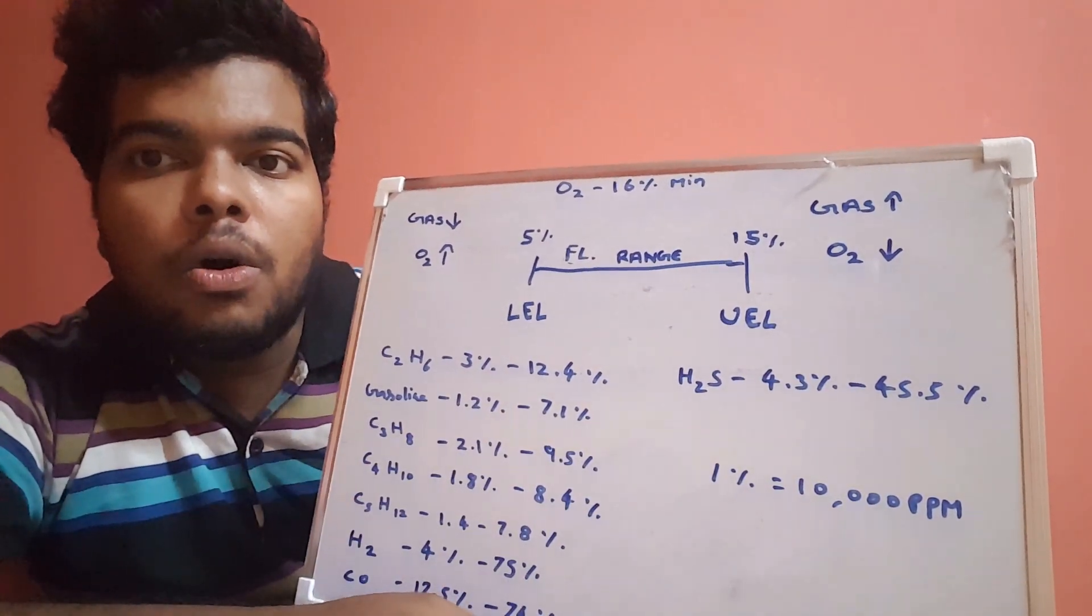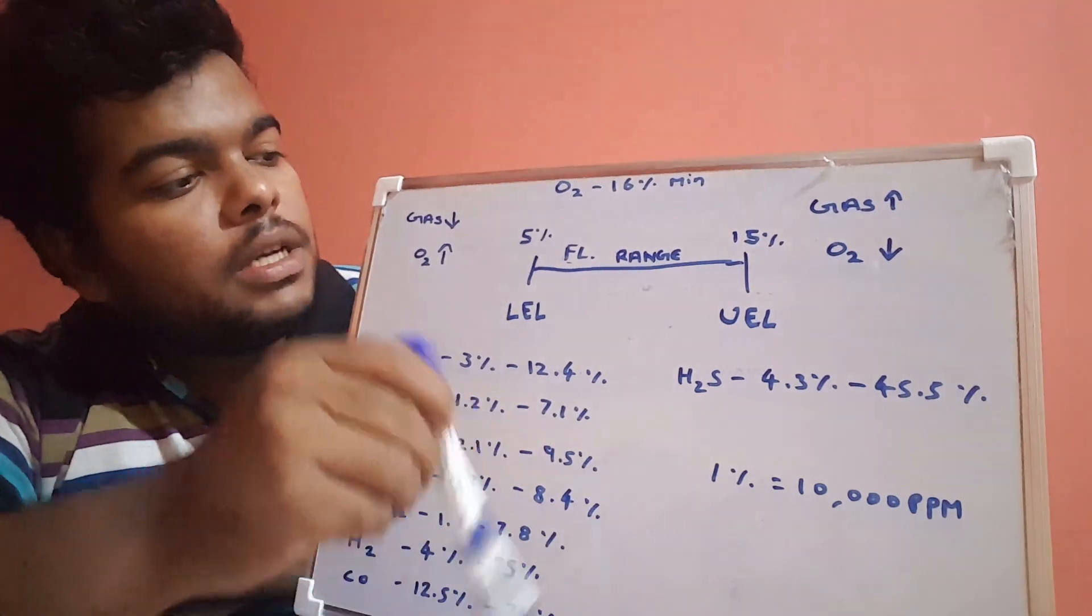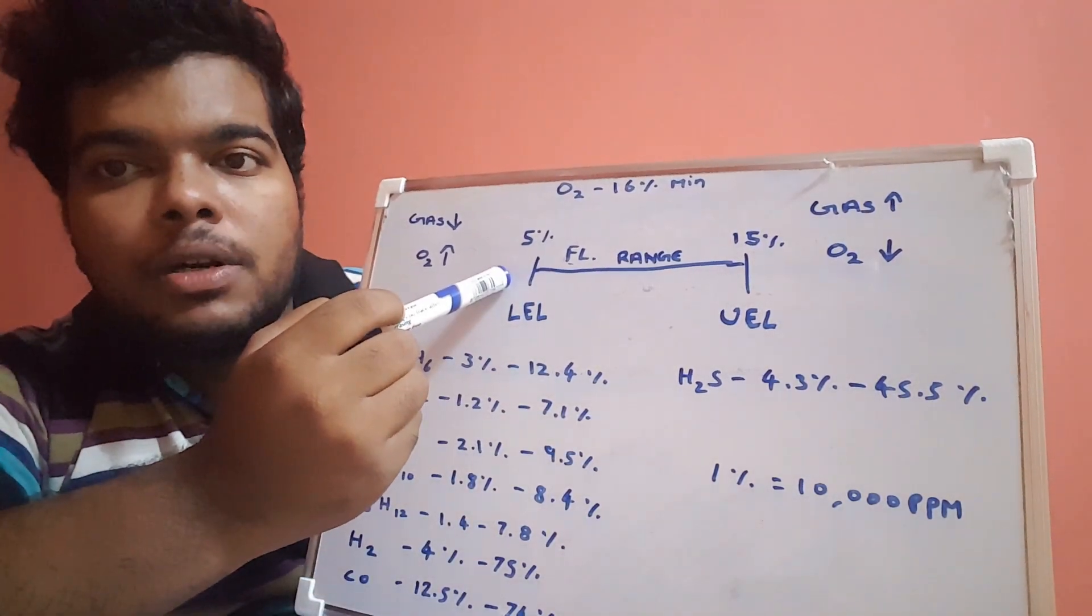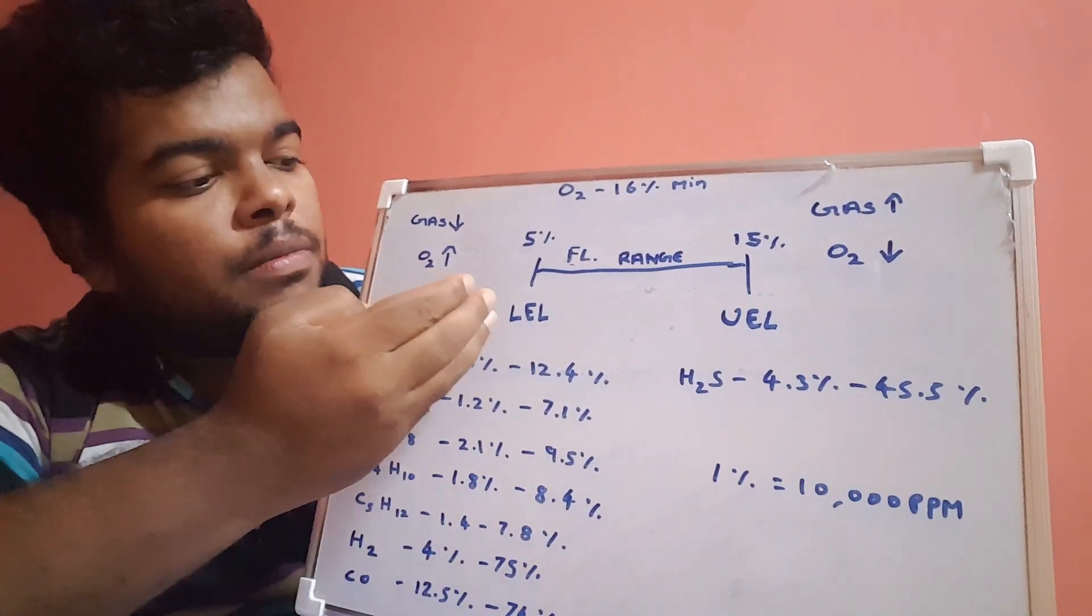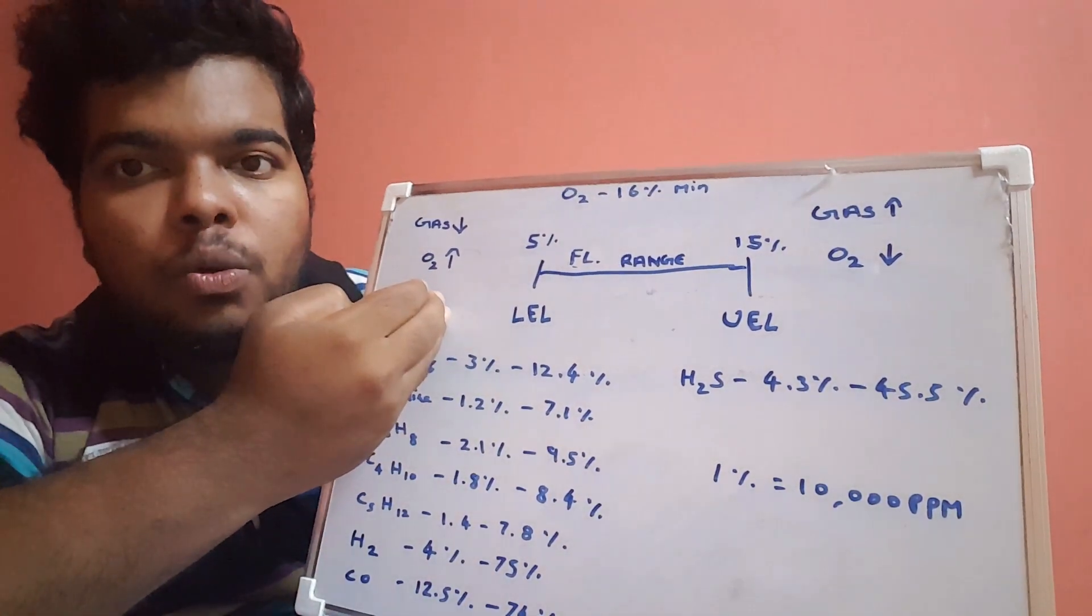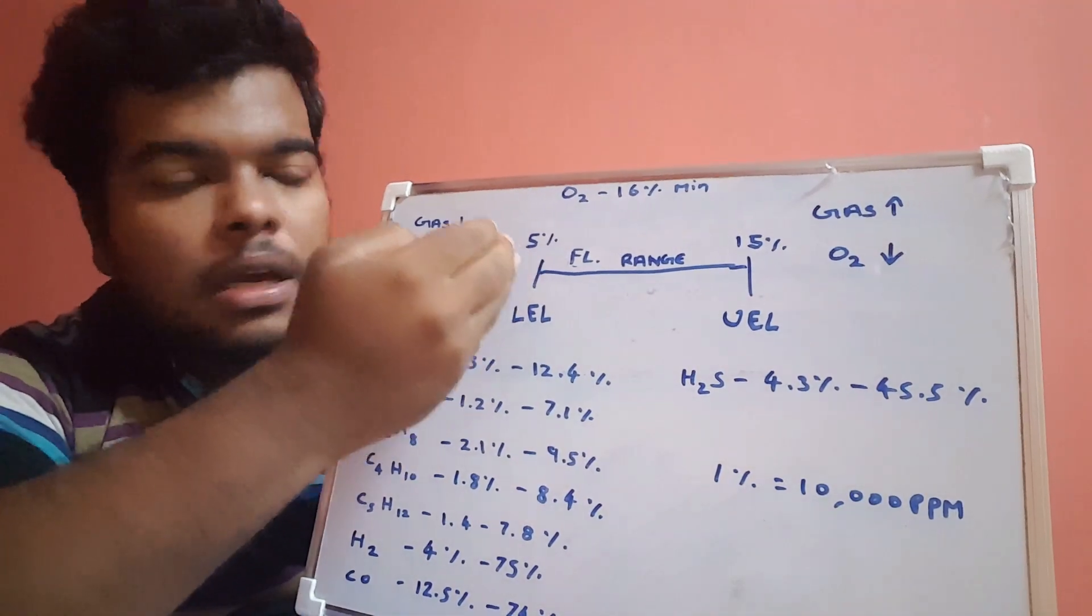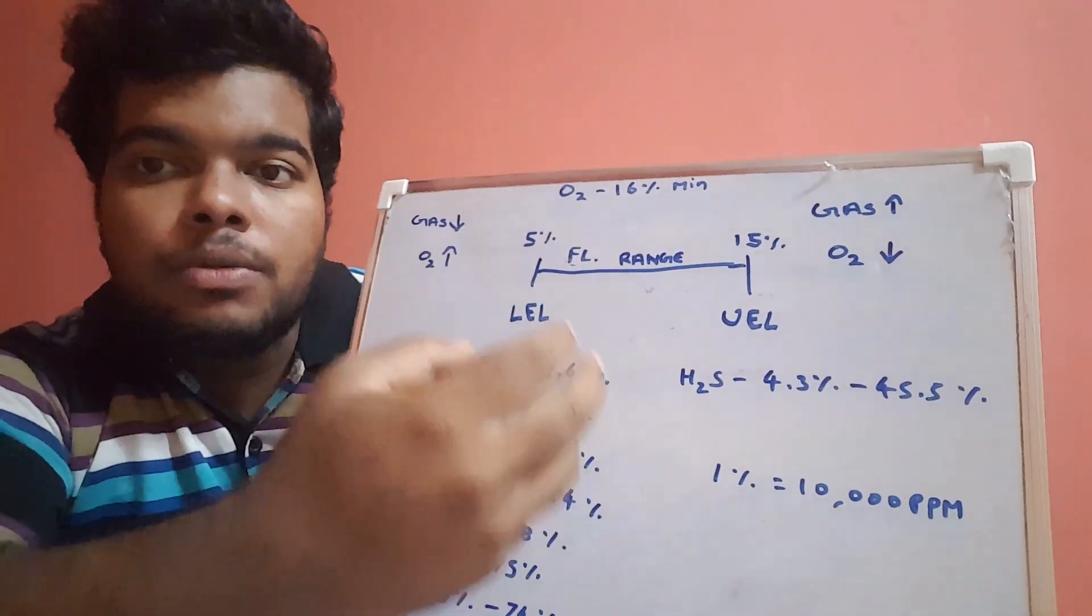Oxygen will be much more here to burn, but the fuel quantity will be so minimum to burn below this LEL value. When this LEL comes, I mean in this region, it will have a good quantity for burning, an appropriate quantity which will burn readily from this point, which is known as LEL.